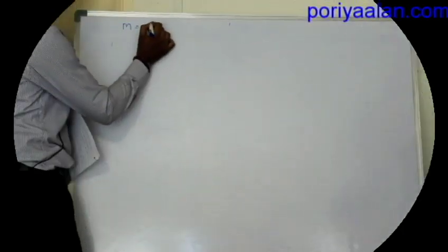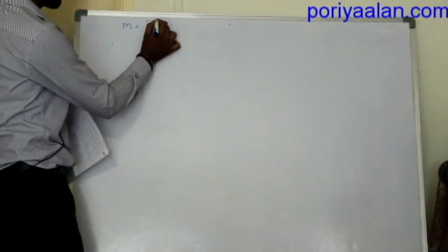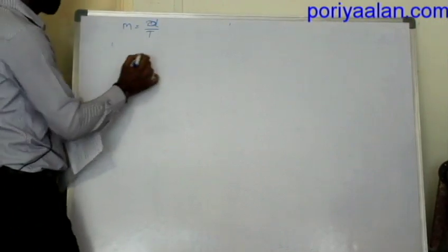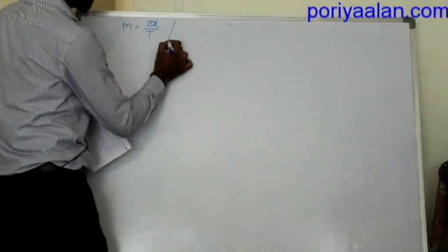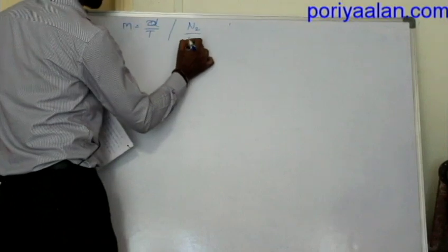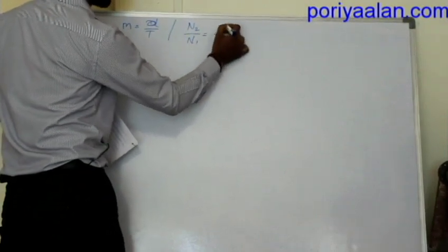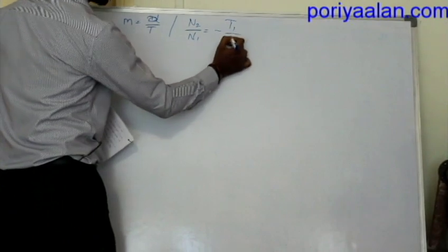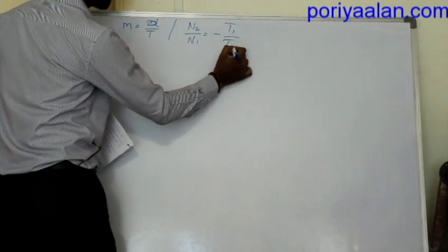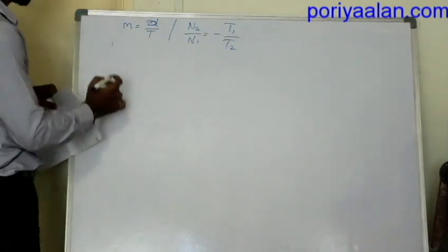The module formula is m = D/T, or small d by t. For the train value, n2 by n1 is equal to minus t1 by t2, where the minus sign accounts for the opposite direction of rotation. These are the two key formulas.